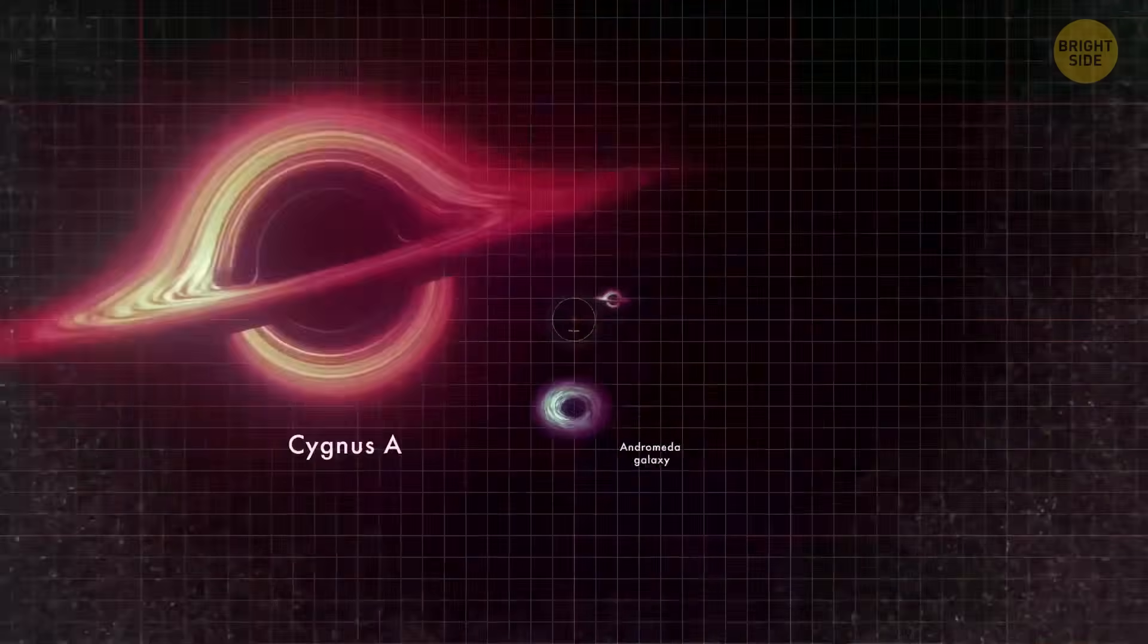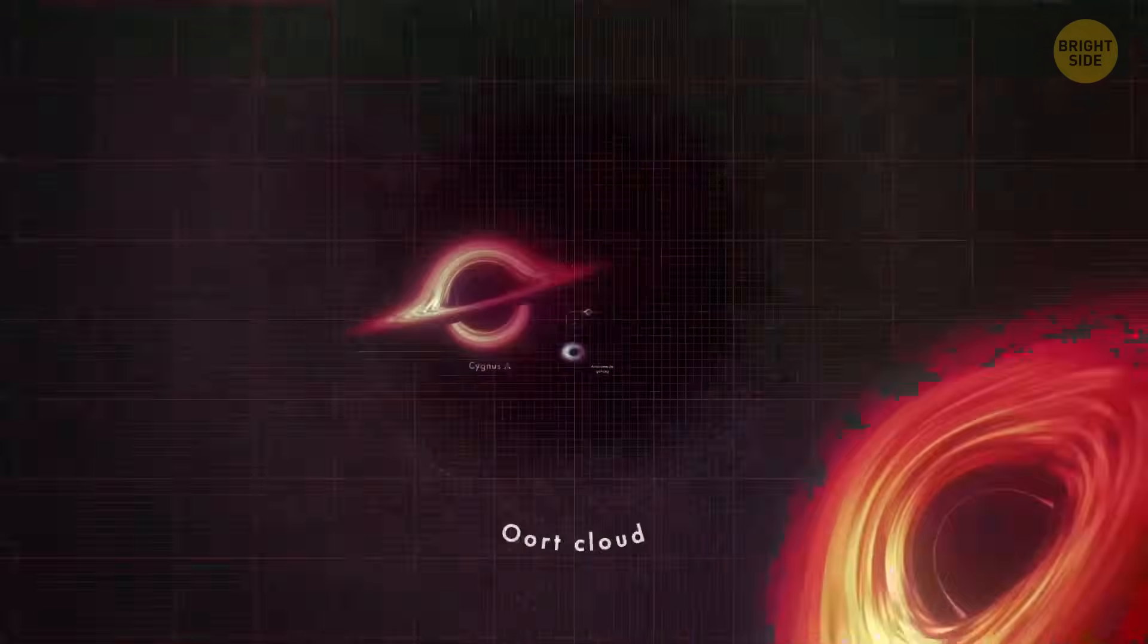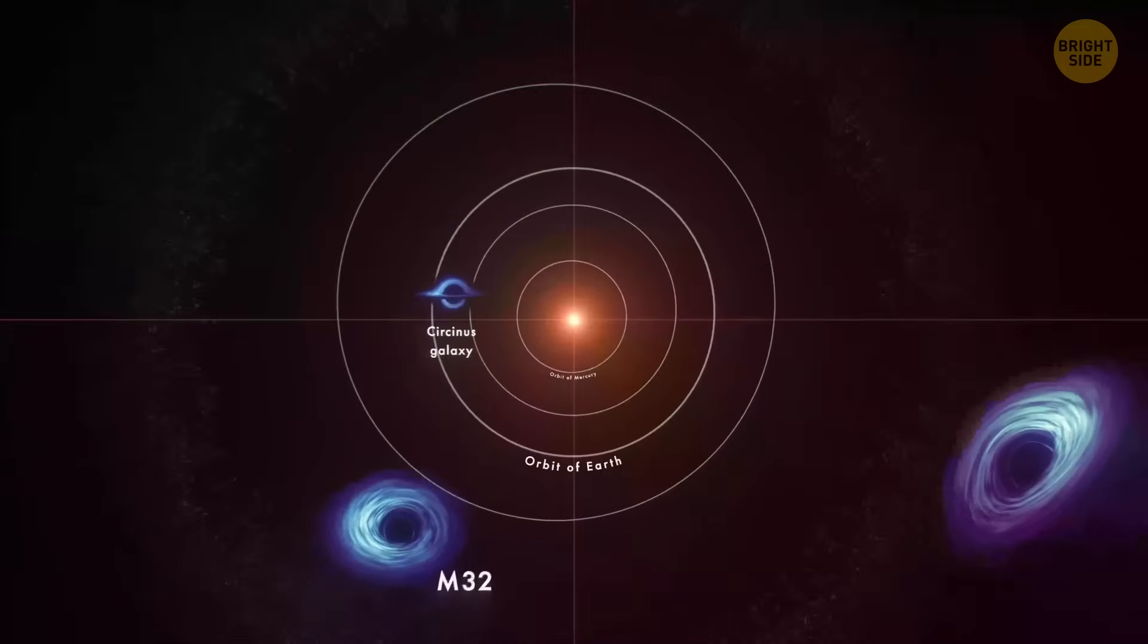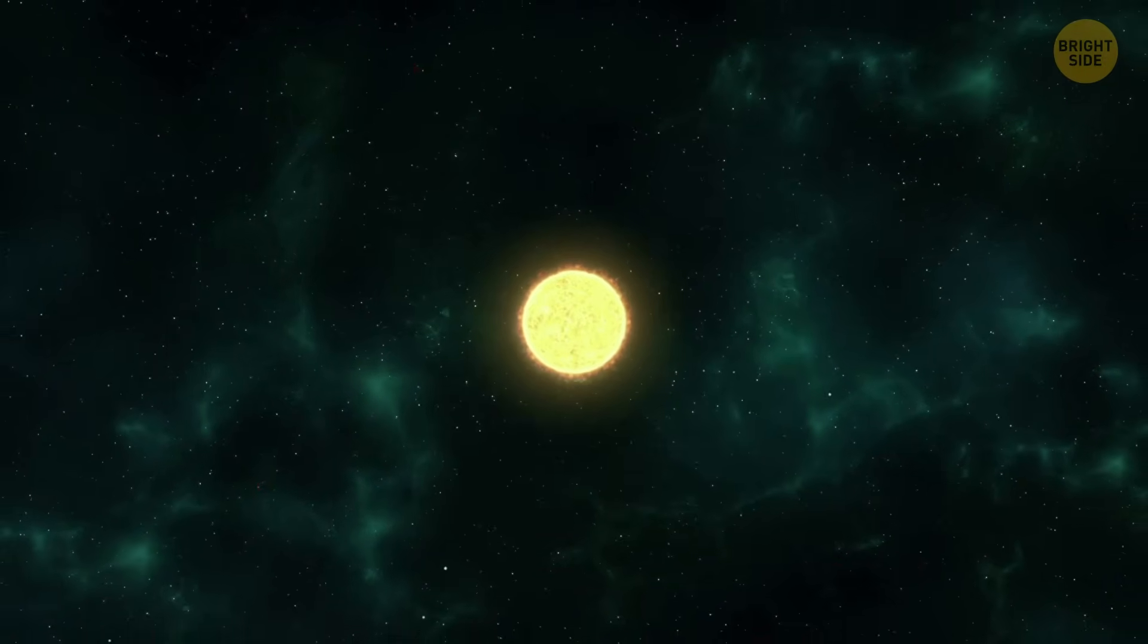The thing is, black holes fall into two camps. There are stellar-mass black holes, a few to a few dozen times the mass of the Sun. When a massive star, like eight times heavier than the Sun, burns through its fuel, it doesn't just fade away.